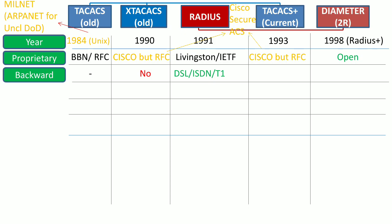XTACACS is not backward compatible with TACACS. RADIUS is, however, compatible with DSL, ISDN, and T1. TACACS+ is a totally different protocol from its predecessors TACACS and XTACACS, so it is also not backward compatible. And Diameter is also not backward compatible with RADIUS.